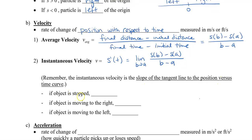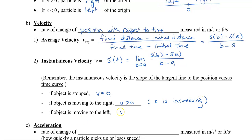So if the object is stopped, the velocity is going to equal zero. If the object is moving to the right, we say that the velocity is greater than zero, and in that case the position s is increasing. If the object is moving to the left, we're going to say that the velocity is less than zero, and then s, or the position, is decreasing.